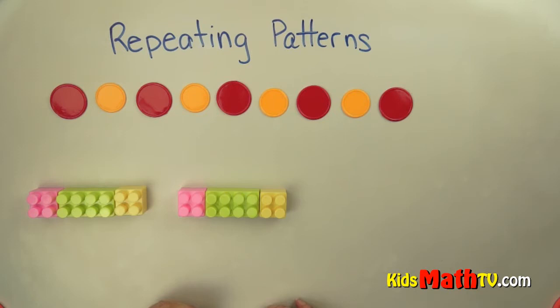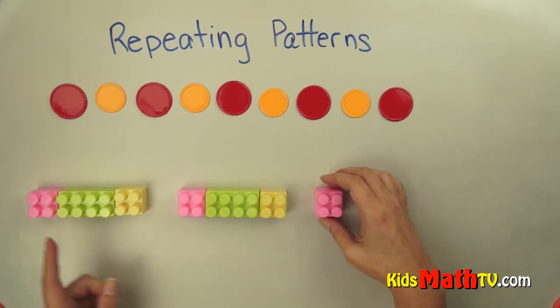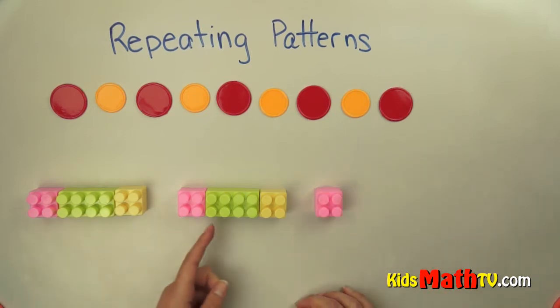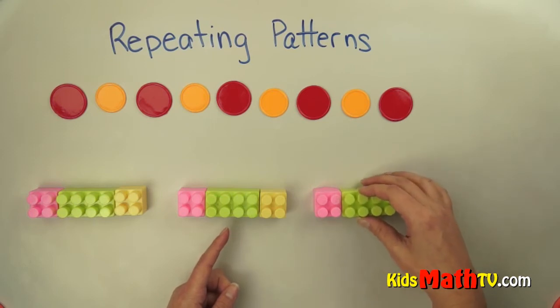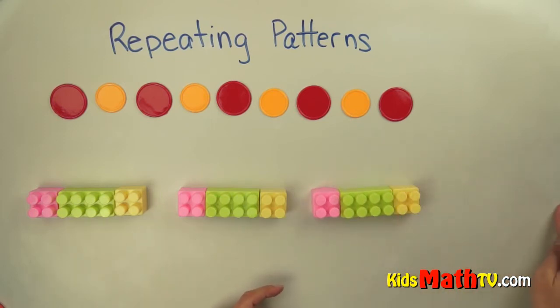I'm going to do those same shapes. So the next one would be the pink. Then after pink comes green, and after green comes the yellow. I can continue that again as long as I have the parts to do so.